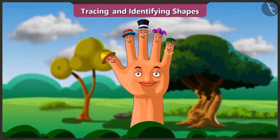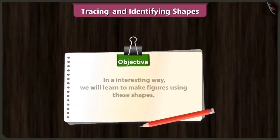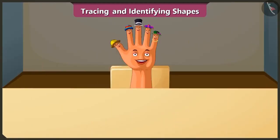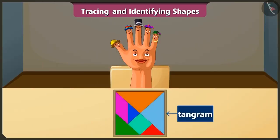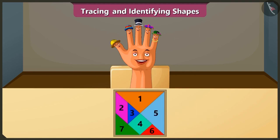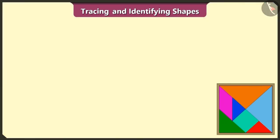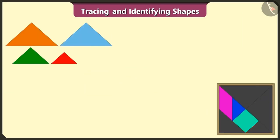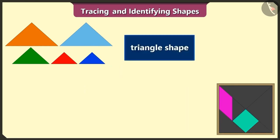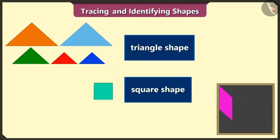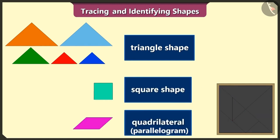Friends, we have learned to identify and trace shapes. Today, in an interesting way, we will learn how to make figures using these shapes. Look friends, this is a tangram. There are a total of 7 shapes in it. This tangram is made of 1, 2, 3, 4 and 5 triangle shapes, 1 square shape and 1 quadrilateral.